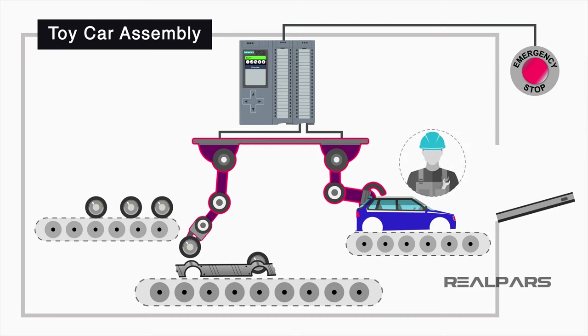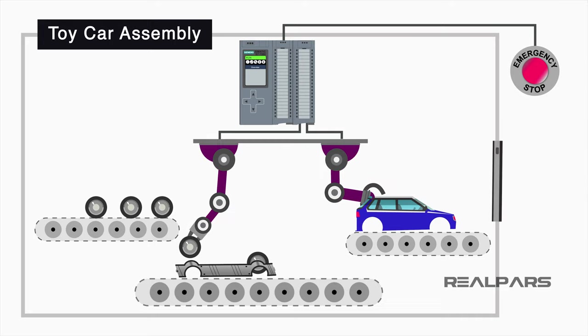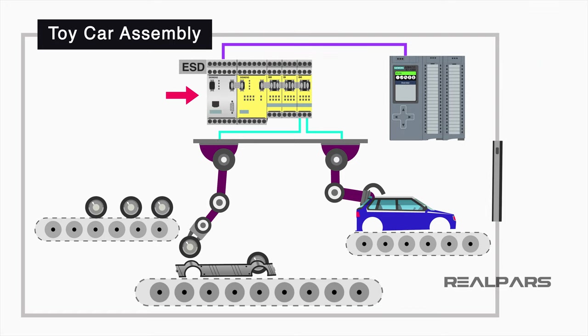This is the premise behind something that is used in almost any control system that you can think of all over the world. Our toy car example demonstrates the function of an emergency stop, whereas what we are going to learn about today is an emergency shutdown, something which is a little different than a standard emergency stop function.